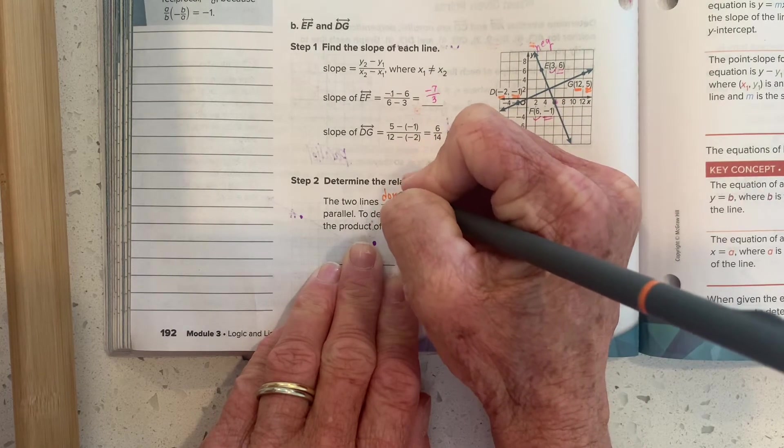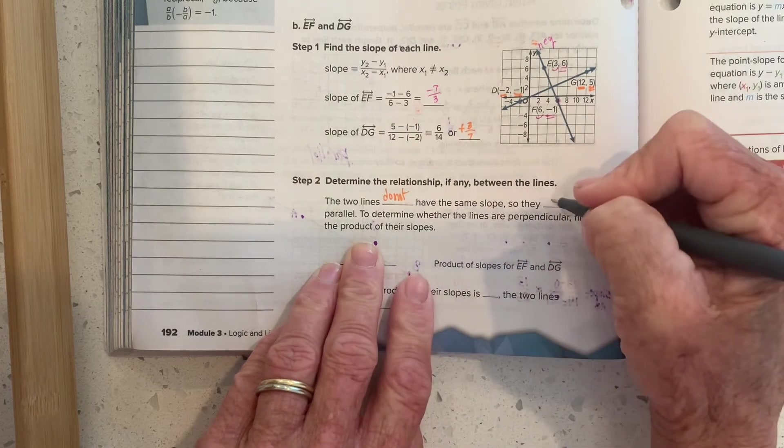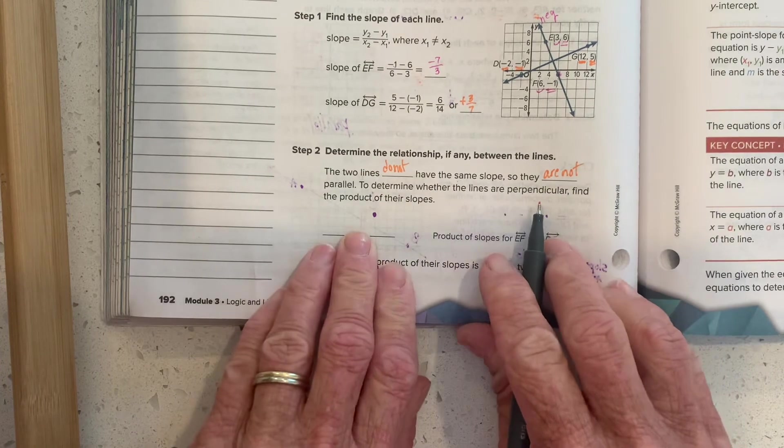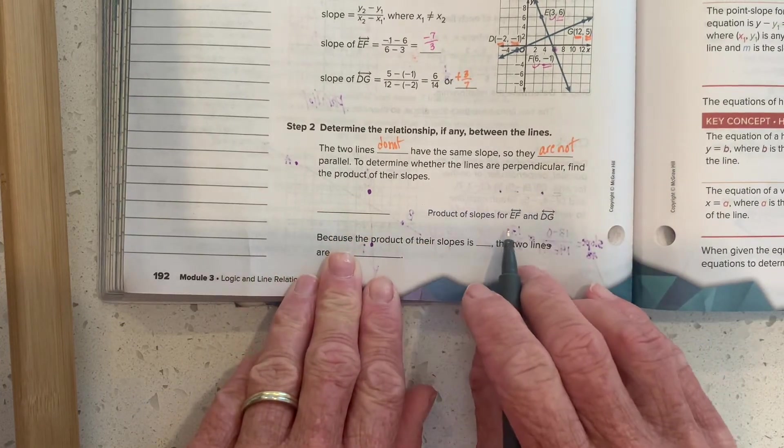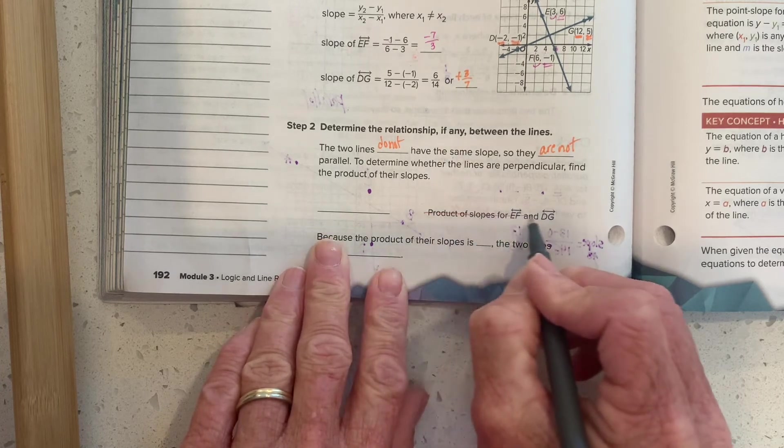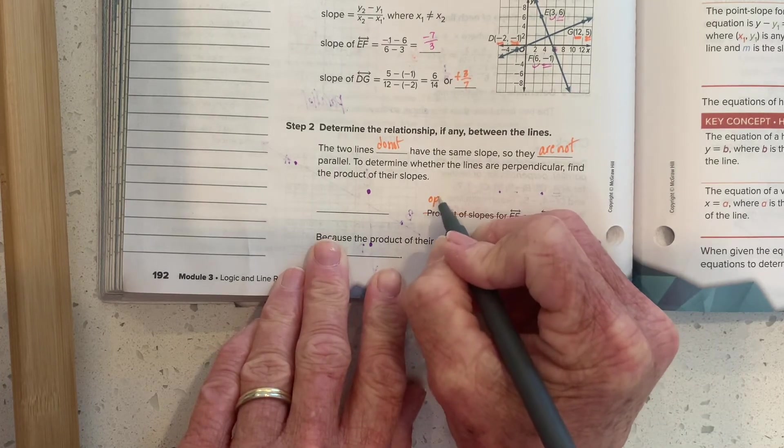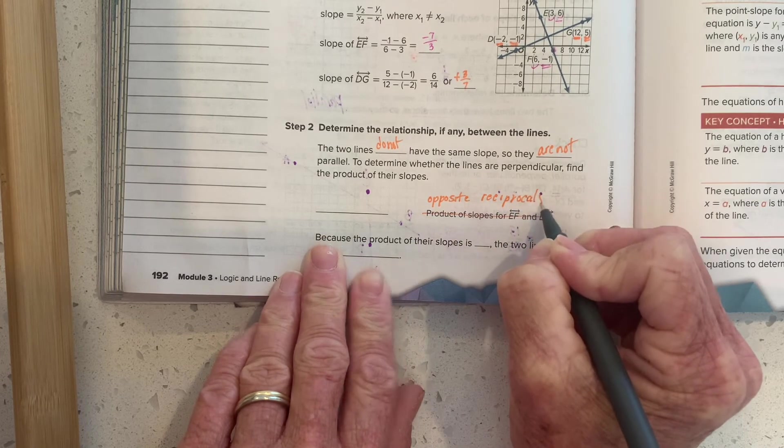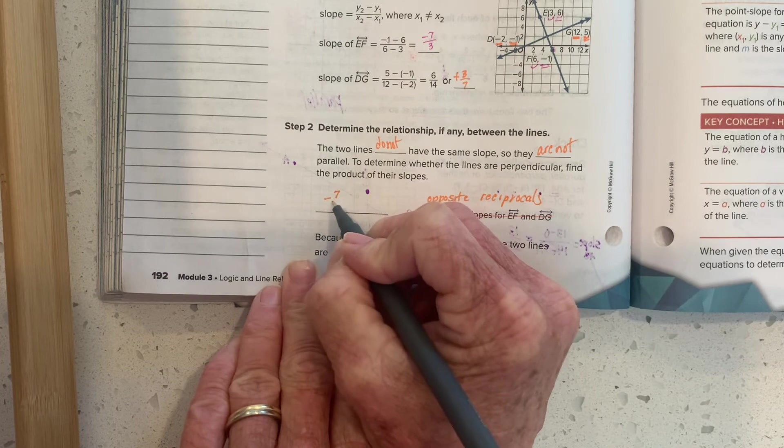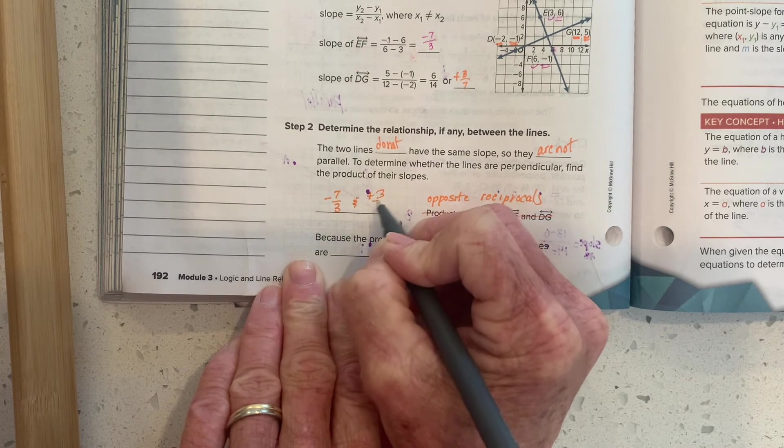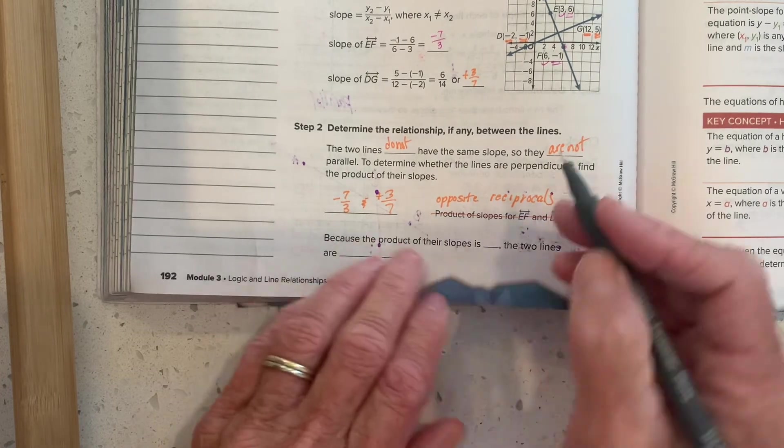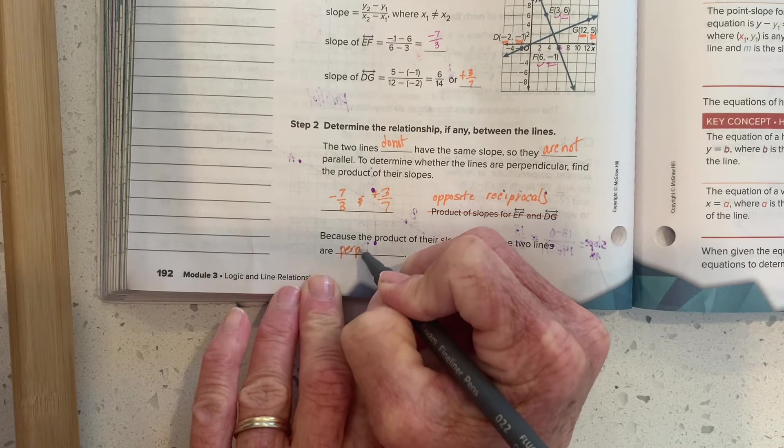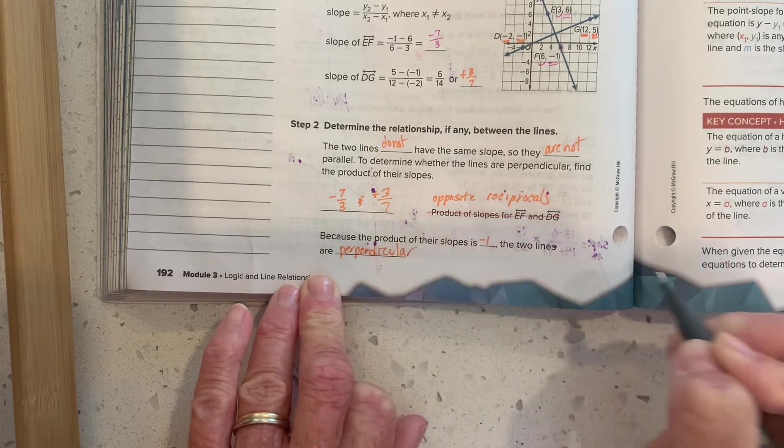The two lines do not have the same slope, so they are not parallel. So are they perpendicular? We want to find the product of their slopes. I don't really think we have to do this. We can just say that their slopes are opposite reciprocals, and that's all it takes to make them perpendicular. We have a negative 7 3rds and a positive 3 7ths. But sure enough, if we were to multiply those together, the product of the slopes is negative 1. So the two lines are perpendicular to each other.